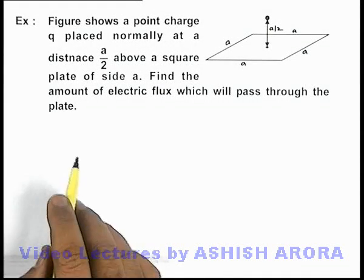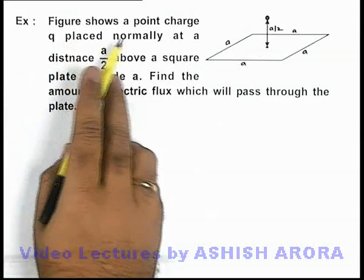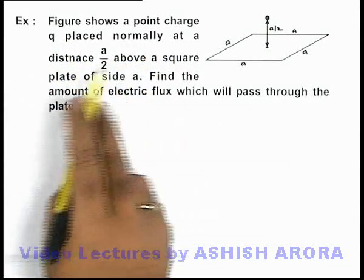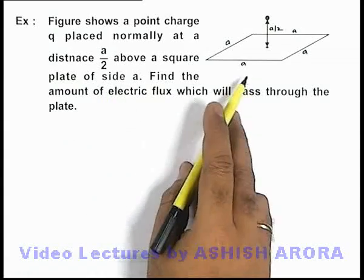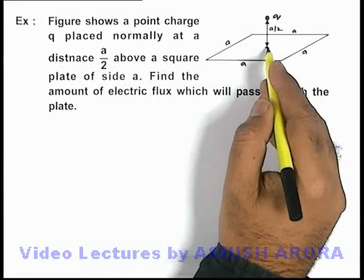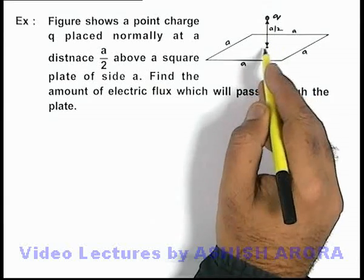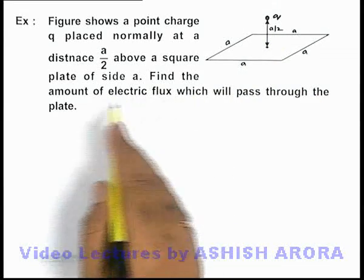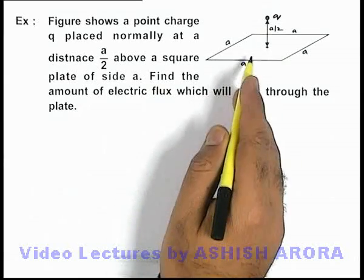In this example, we are given that a figure shows a point charge q placed at a distance a/2 above the center of a square plate of side a. We are required to find the amount of electric flux which will pass through the plate due to this charge.